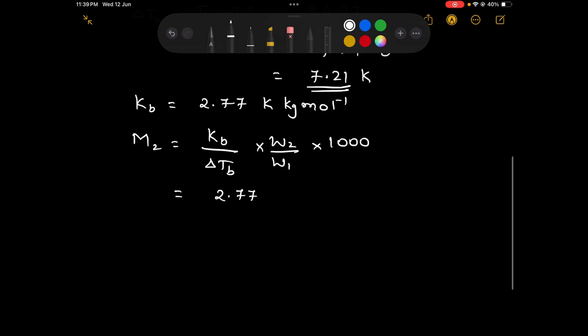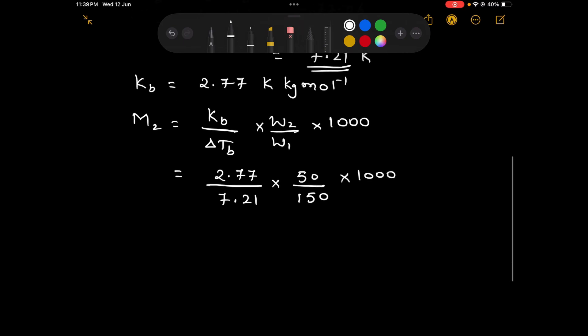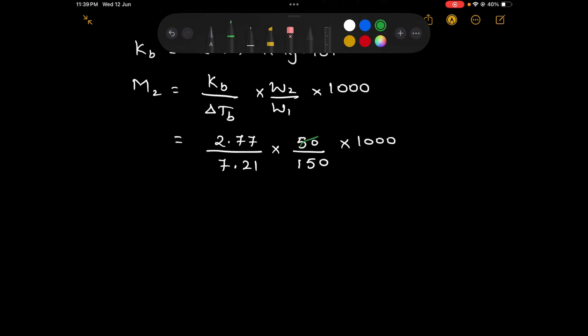KB is 2.77 for ethyl acetate, Delta TB we have just found out is 7.21, multiplied by 50 mass of solute upon mass of solvent multiplied by 1000.